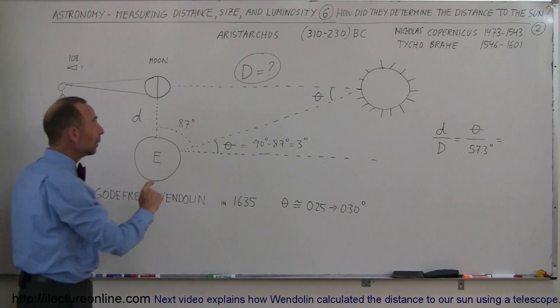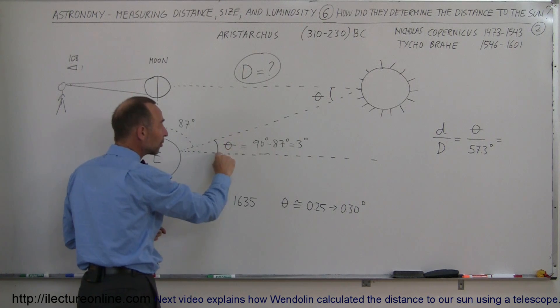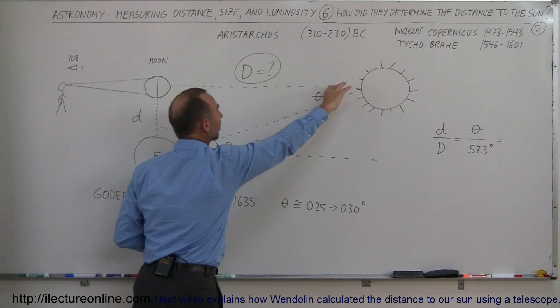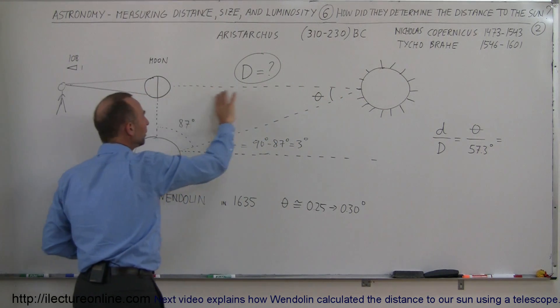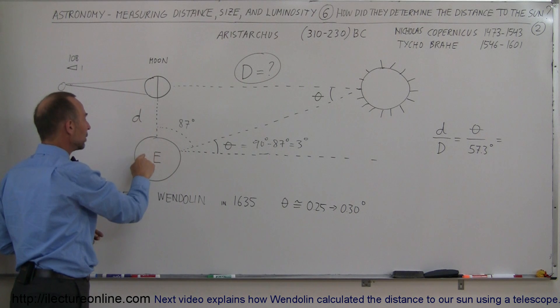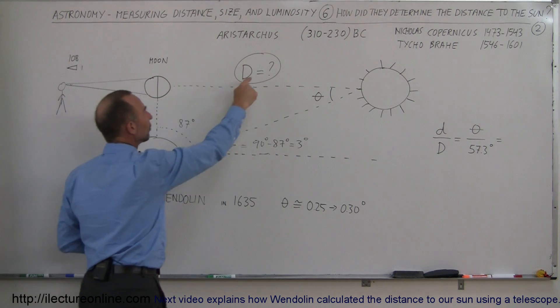And from that, he was able then to figure out that this angle right here was about 3 degrees, which meant that this angle right there was about 3 degrees, and now we have this triangle right here.